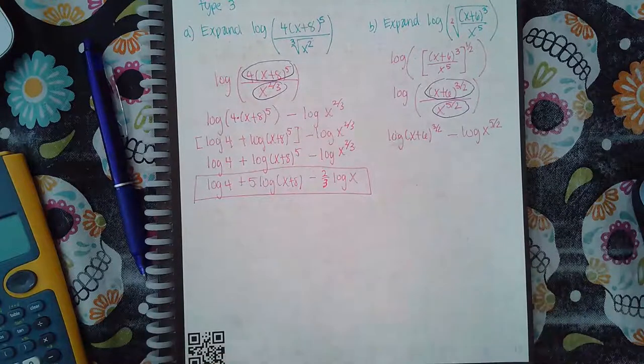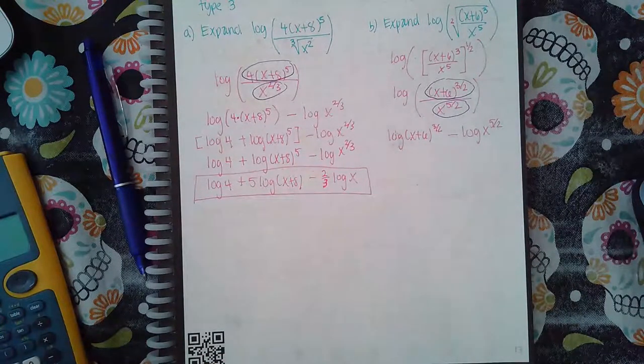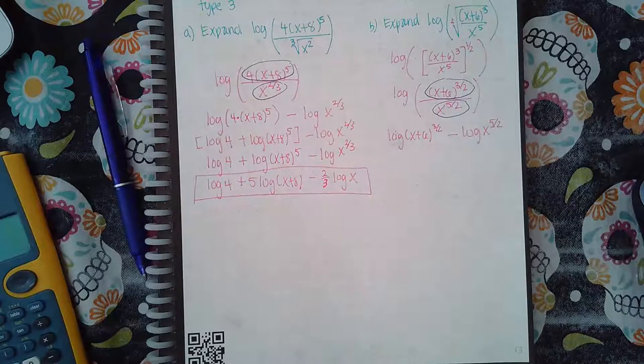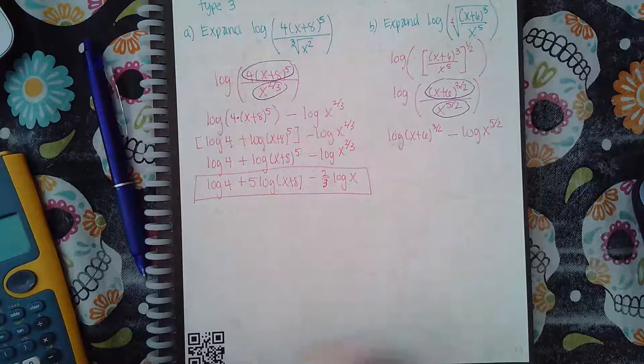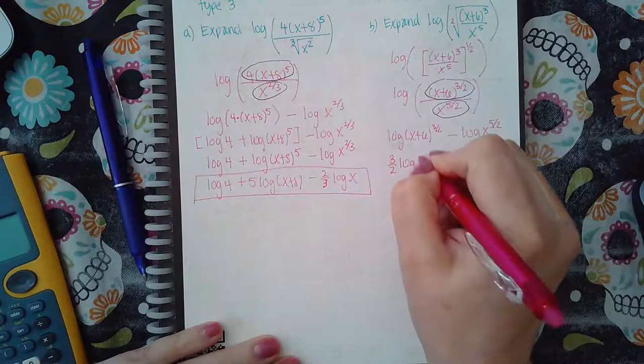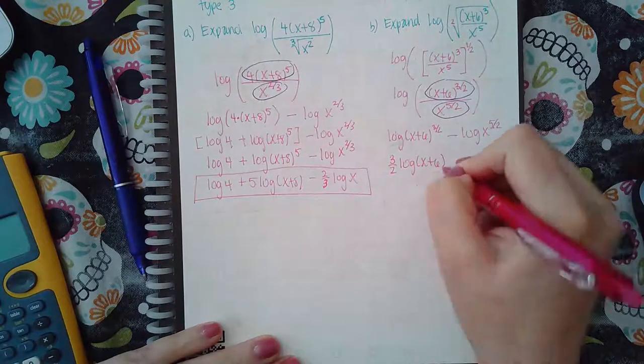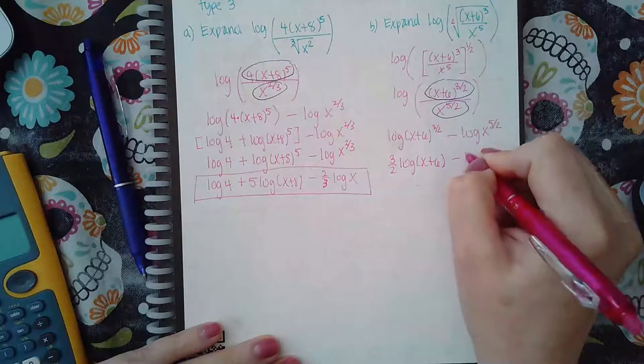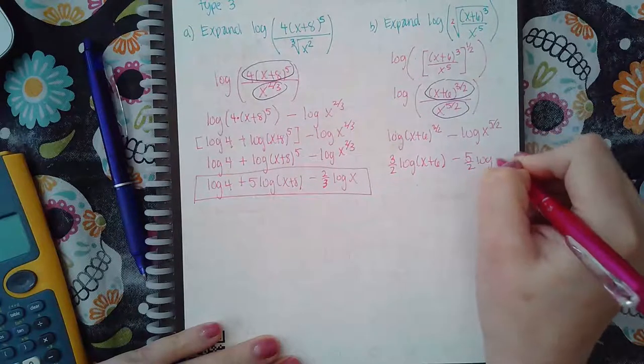Then I don't have any products, there's nothing multiplied by this x and there's nothing multiplied by this 6, so I don't have step two. There's no product in either of my arguments but I do have powers in both of my arguments, so I do have to use the power rule which is to bring down that power to the front of the log and bring down this power to the front of the log.